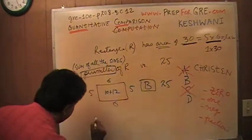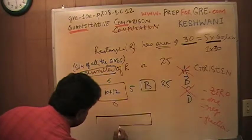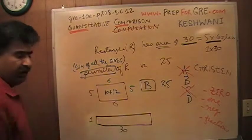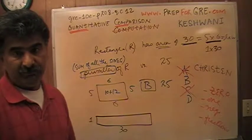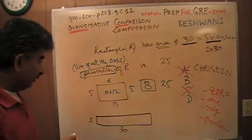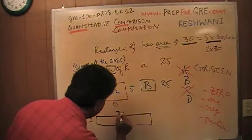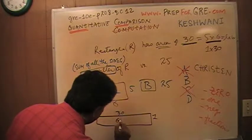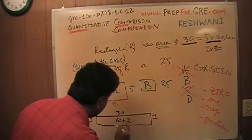This side is one, this side is 30. This rectangle also has the area of 30. But now the perimeter of this one, this one is 30 plus 30 is 60, 1 plus 1 is 2 is 62.